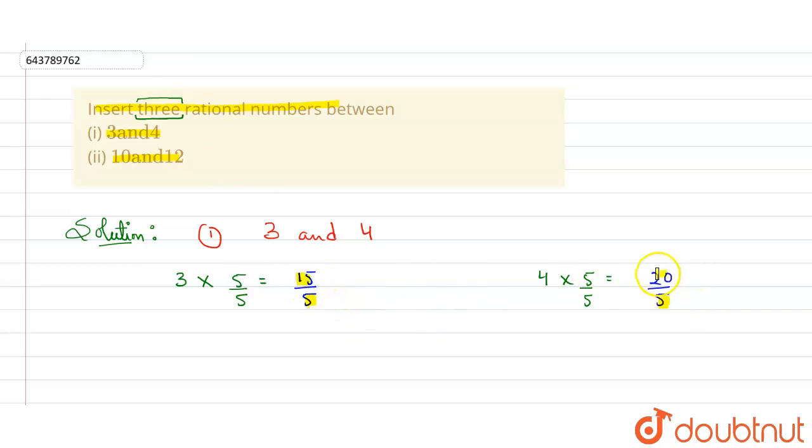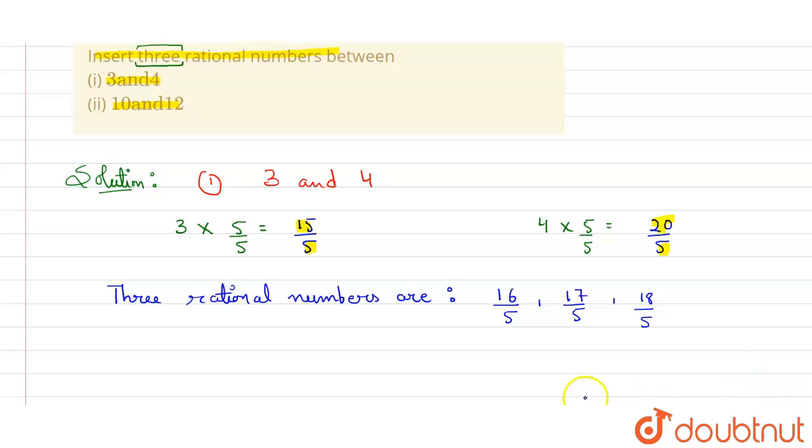Here the limit is 15 and 20, so now we can write three rational numbers between them. Three rational numbers are: between 15 by 5 and 20 by 5, it can be 16 by 5, 17 by 5, and 18 by 5. We can find more than three.